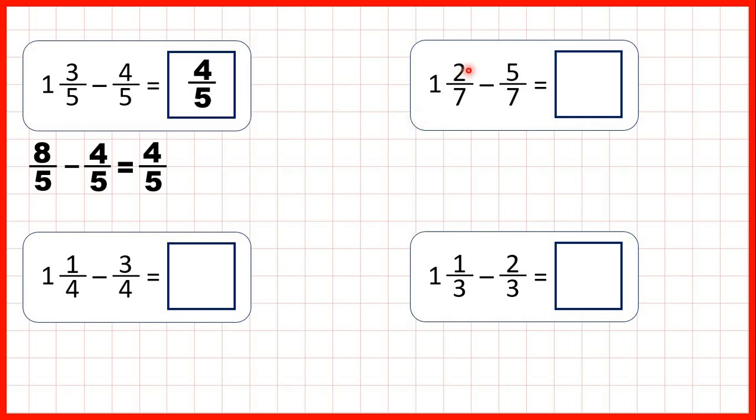Now we have 1 and 2 sevenths, but we need to take 5 sevenths away. So we need to turn this mixed number into an improper fraction. 1 times 7 is 7, plus 2 is 9, and the denominator stays the same when we change it from a mixed number to an improper fraction.